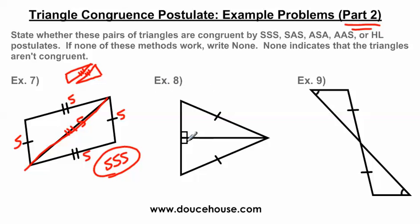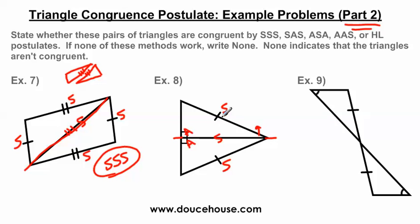Looking at number eight, the same thing is happening — I have a triangle on top and a triangle on the bottom sharing a side in the middle, so those sides are congruent to each other. We also have this side and this side congruent. And then this angle is congruent to this one because they're both 90 degrees. Looking at the triangle on the top, I have an angle and two sides. Looking at the triangle on the bottom, I also have an angle and two sides. So it's going to be either the side-angle-side postulate or the hypotenuse-leg.